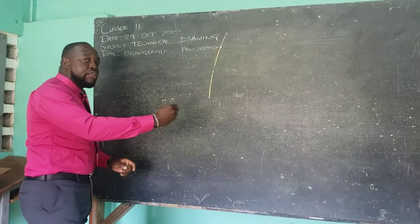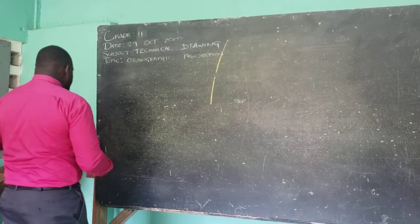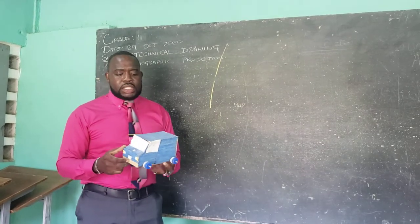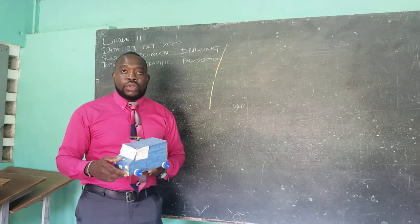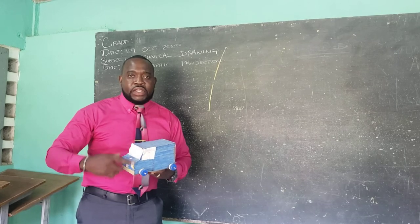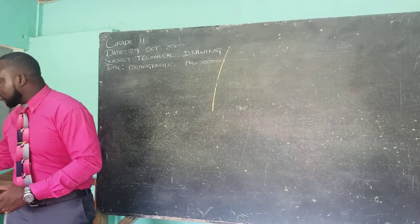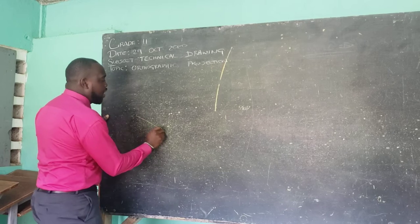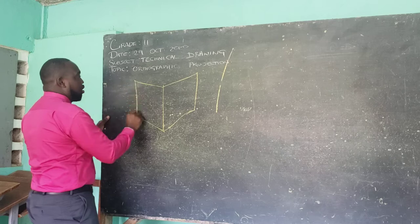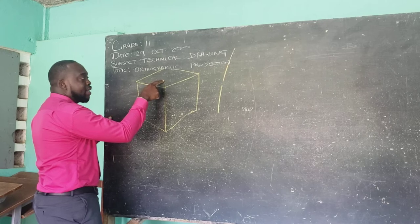We are going to have separate views of the object, all at 90 degrees. For example, if we should view this object in isometric, we are able to see the front elevation, the end elevation, and also the plan.